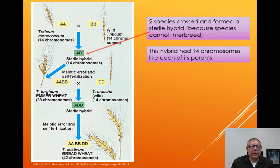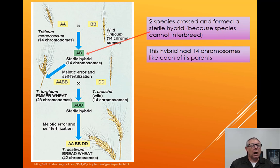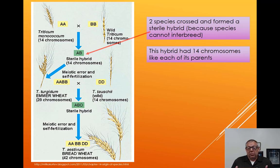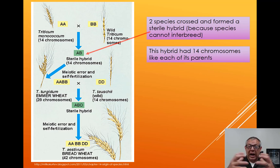Let's walk through how wheat evolved. You start with two species in the genus Triticum: Triticum monococcum and wild Triticum, each with 14 chromosomes. At some point, they crossed and formed a viable but sterile offspring — a sterile hybrid with 14 chromosomes, just like each of its parents. That's what different species do: they can sometimes produce viable offspring, like a mule, but those offspring are not fertile.